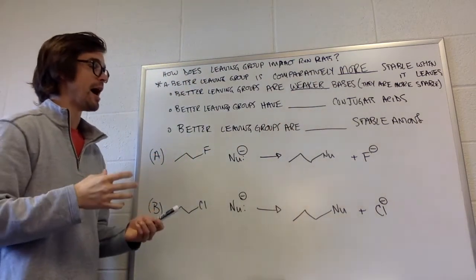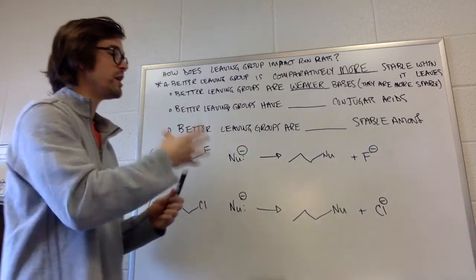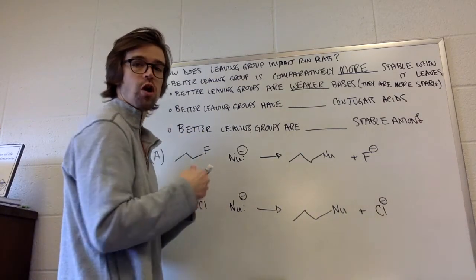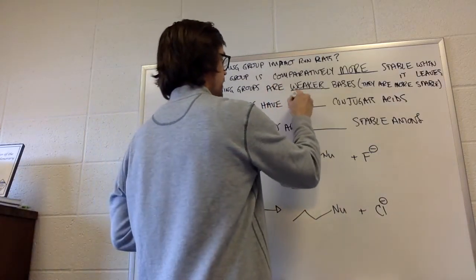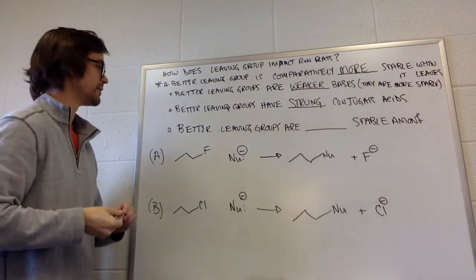Better leaving groups have blank conjugate acids. Well, if you're a weak base, you came from a strong conjugate acid. So they have strong, they came from strong conjugate acids.